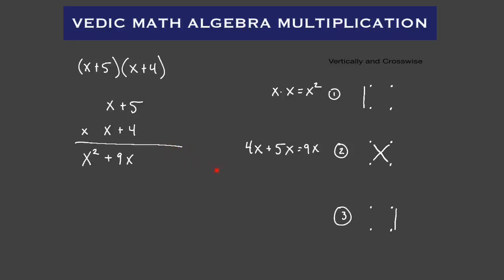Step number three is just the right-hand side. So that's going to be five times four, which gives us 20. So there's our answer: X squared plus nine X plus 20.